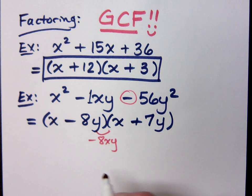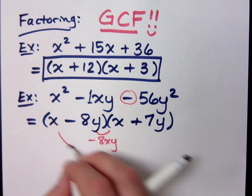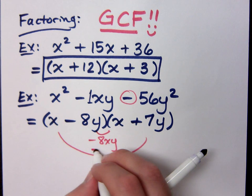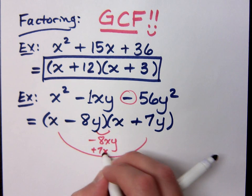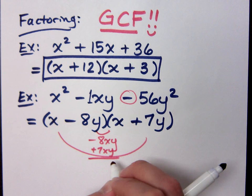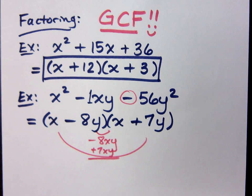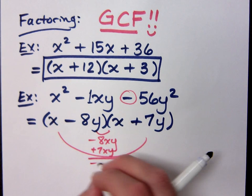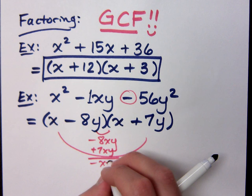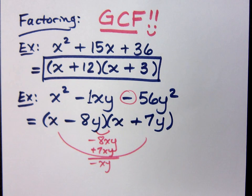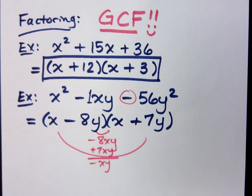Check on the inside: it's minus 8Y. Check on the outside: it's plus 7XY. That combines to give you a negative XY. Everything checks out. Do you all agree?